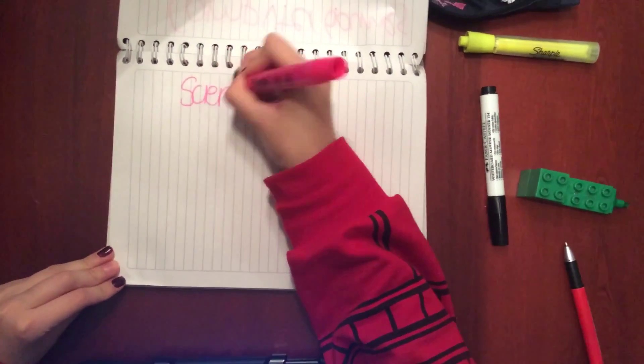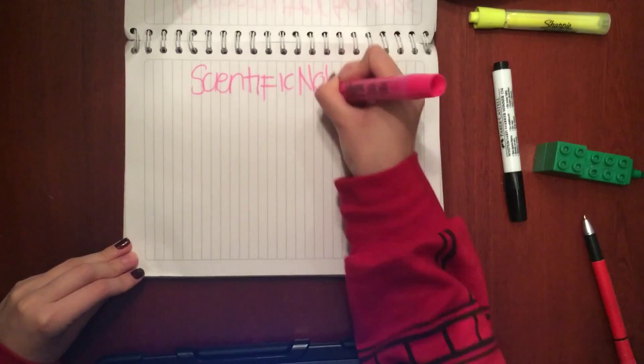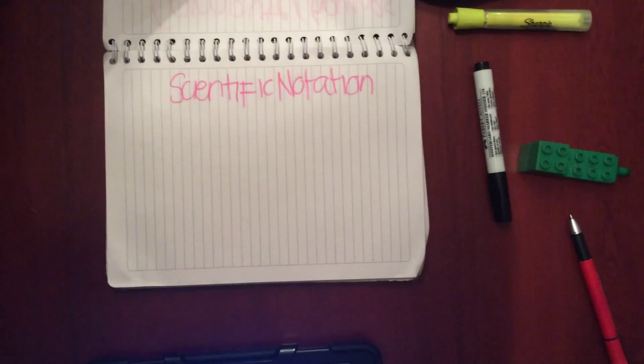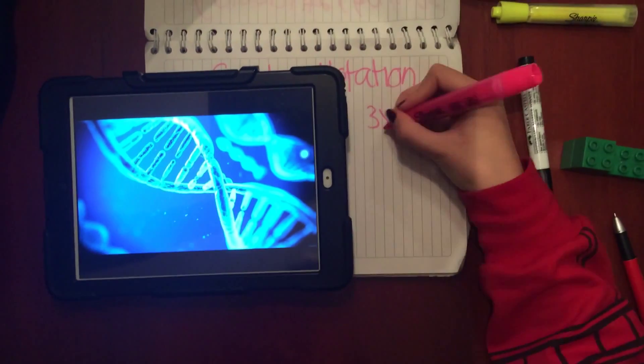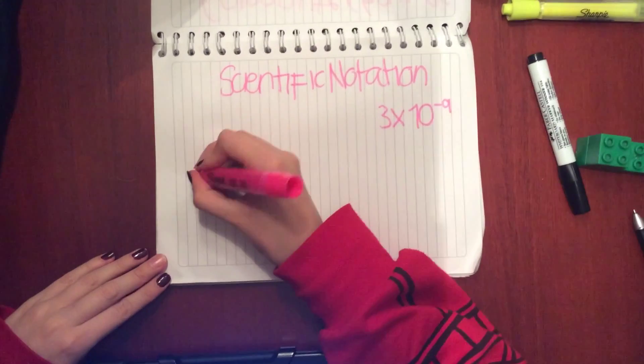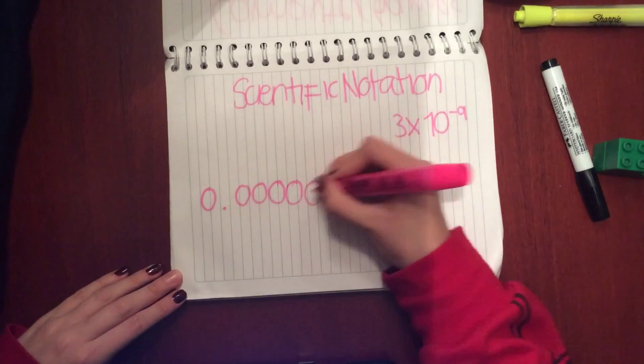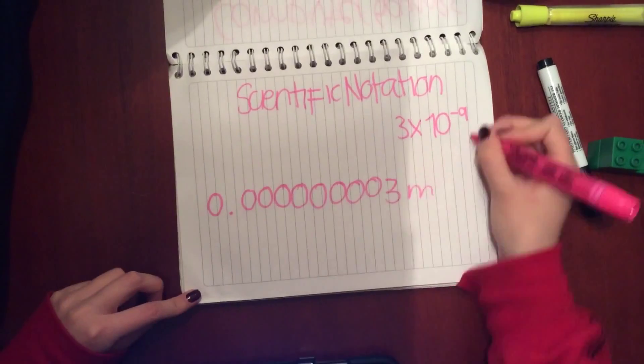The second use is scientific notation. Imagine DNA for example. It is 3 times 10 to the minus 9 meters big. It is much easier writing that than 0.000000003 meters.